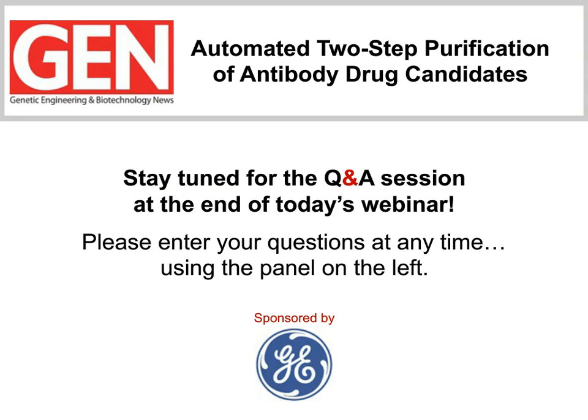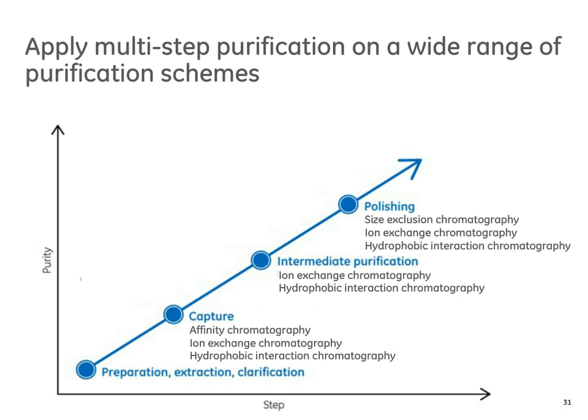Thanks, Erwin and Matthias. That was a very informative presentation — you provided the audience with great methodology for multi-step purification processes. Before we continue with the second part of Christine's presentation, I want to remind everyone to submit questions for the Q&A session. What you described was one example of how automated multi-step purification can be run, but it can be used on a wide range of purification schemes independent of the application. Different techniques can be combined to reach desired purity, starting with a capture step and continuing with intermediate purification and polishing steps when needed. When the capture step is affinity chromatography, the eluted protein is often of high purity and only a single polishing step is needed.